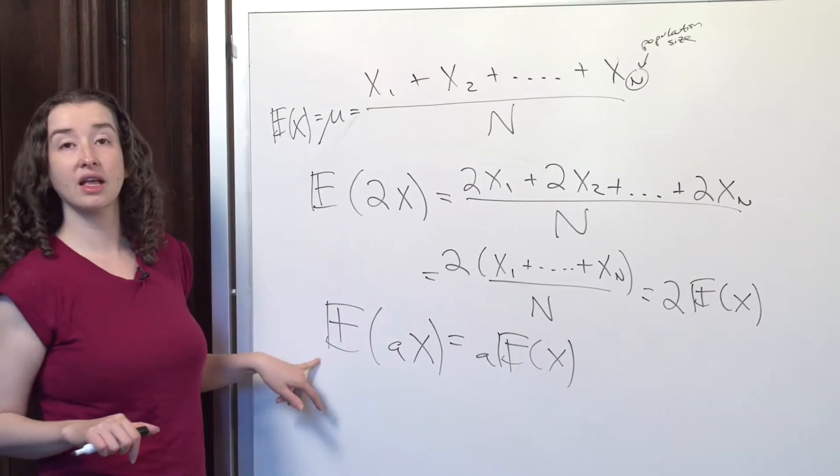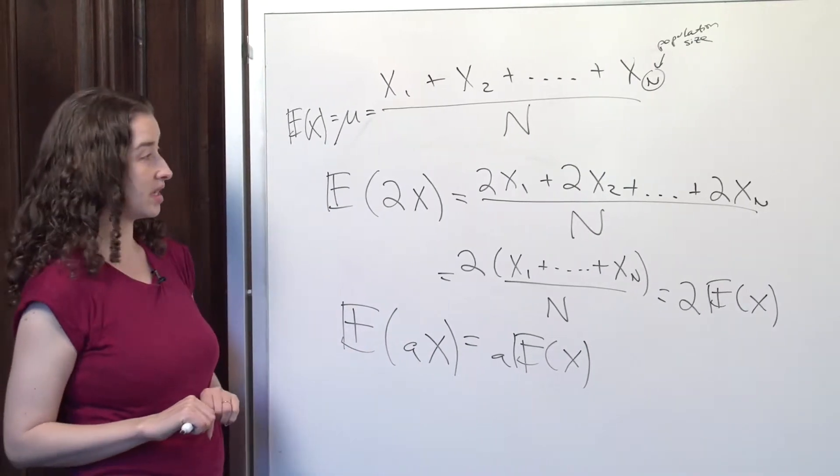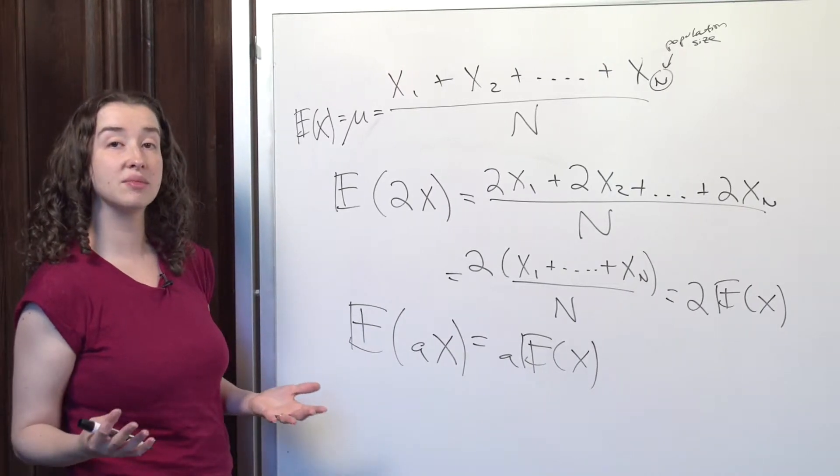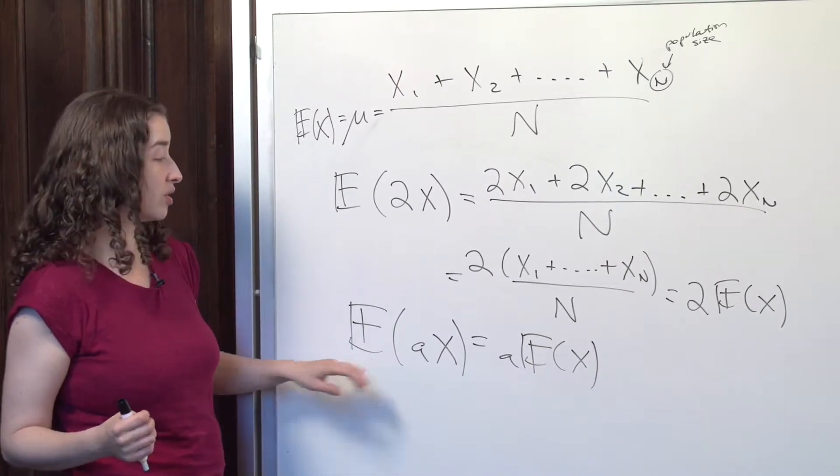In other words, the constant can just come out. The constant just comes out. And that may seem obvious, but we're going to use that property at times when it may not be obvious. So it's important to write it out explicitly.